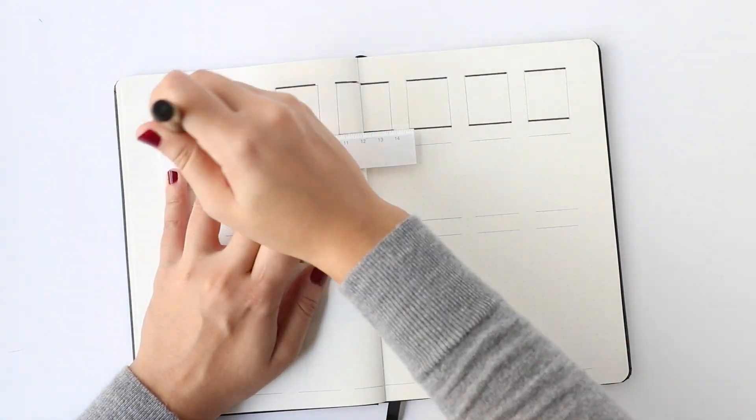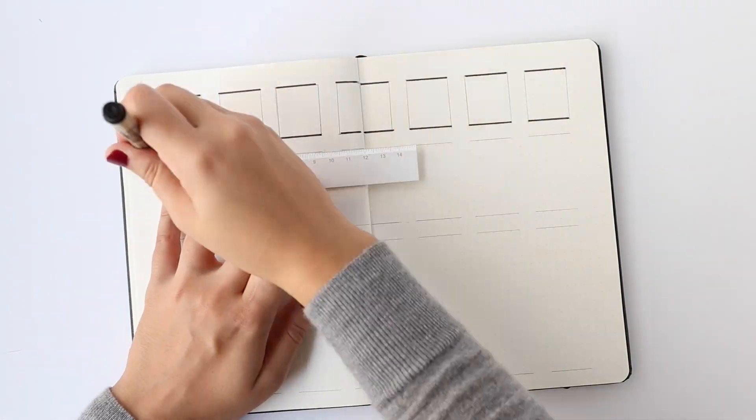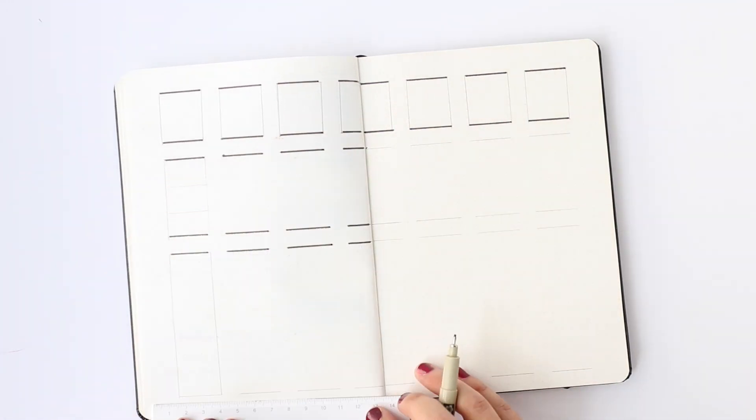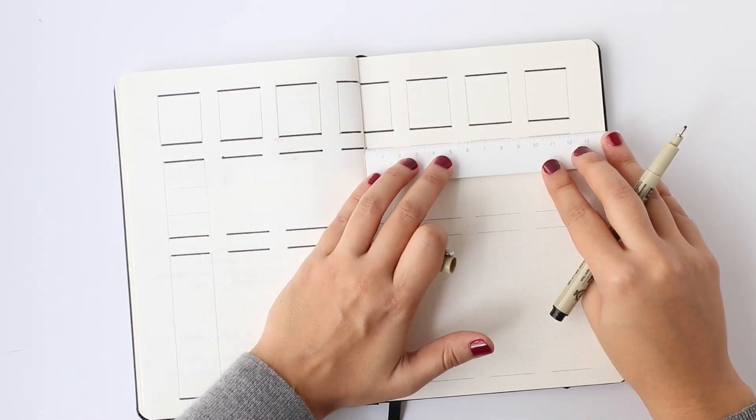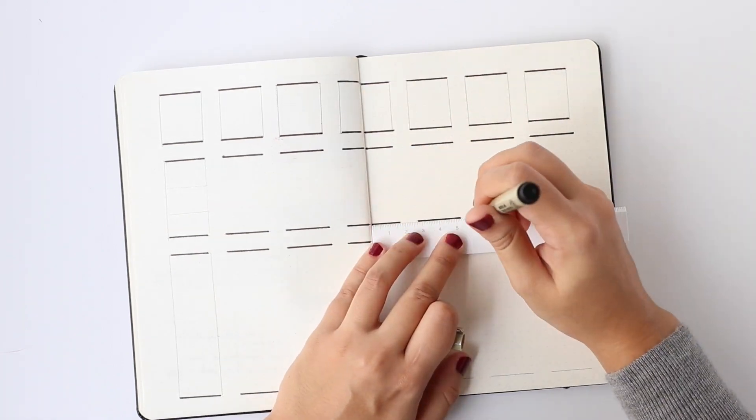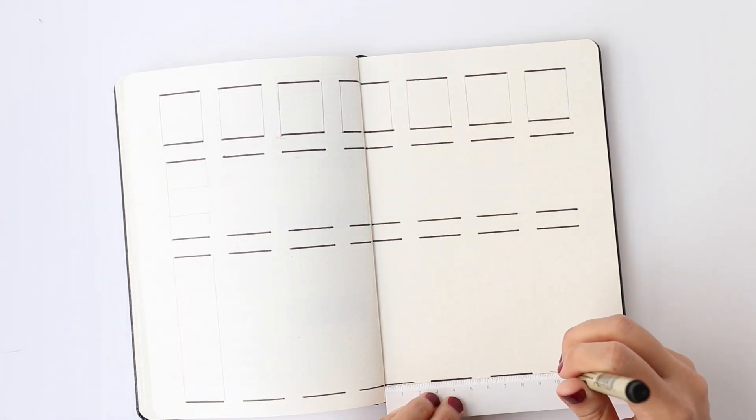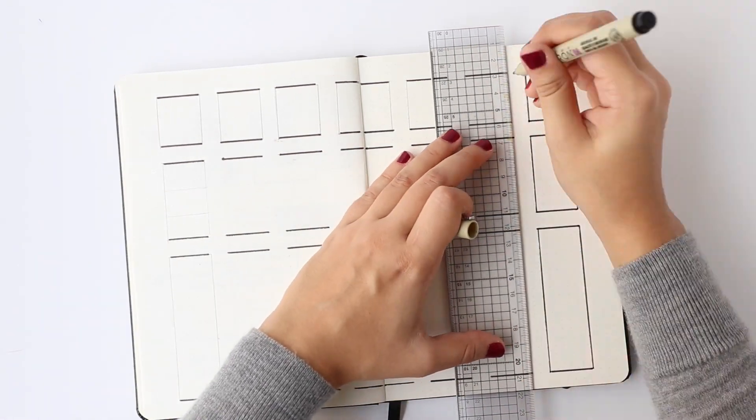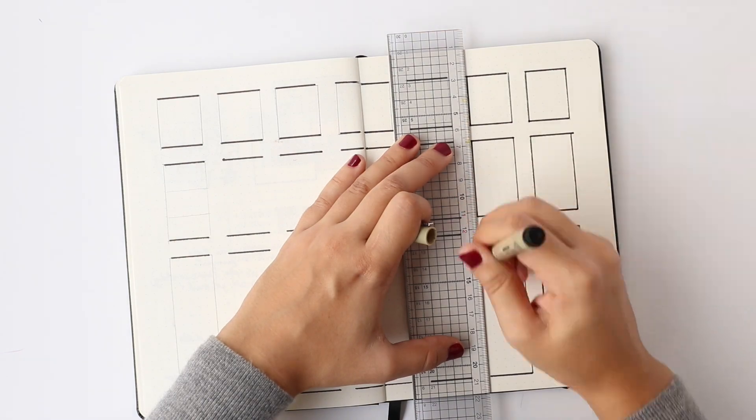Last but definitely not least is the weekly spread. So last month's weekly spread was a vertical spread but it was a little bit more on the intricate side of things, so I wanted to bring it back to the basics by apparently drawing a lot of blocks. So the top block is where I write which day of the week it is. You could also write the number of the day of the week. Definitely a lot of space for that.